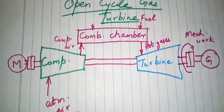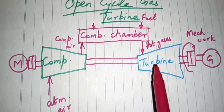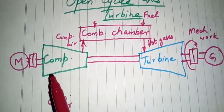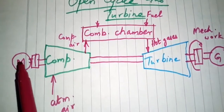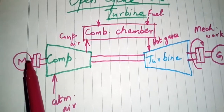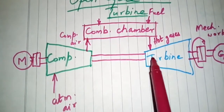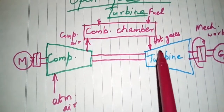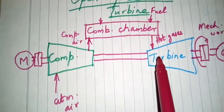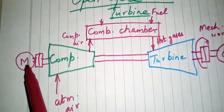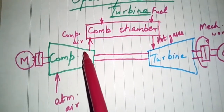To revise: the open cycle gas turbine has three main components — compressor, combustion chamber, and turbine. Atmospheric air is compressed, and a starting motor is used initially. Once the turbine develops power and supplies it to the compressor, the motor shuts off.